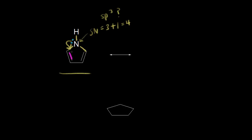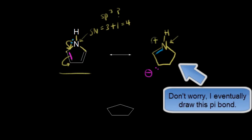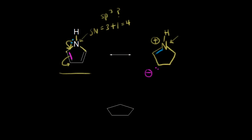Drawing the resonance structure: we have the ring, the nitrogen bonded to a hydrogen, the electrons in blue moved in to form a pi bond, and the electrons in magenta moved off onto this carbon giving it a negative one formal charge — while nitrogen gets a plus one formal charge. The steric number for this nitrogen is three sigma bonds plus zero lone pairs, giving three, which implies sp2 hybridization.